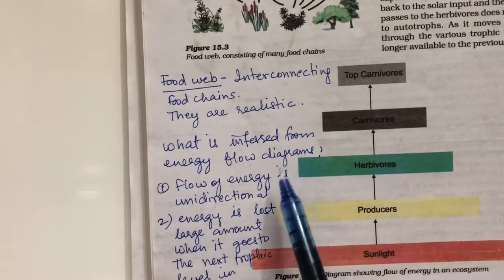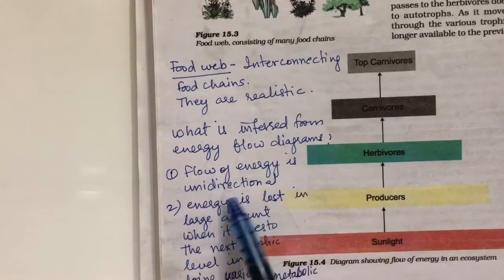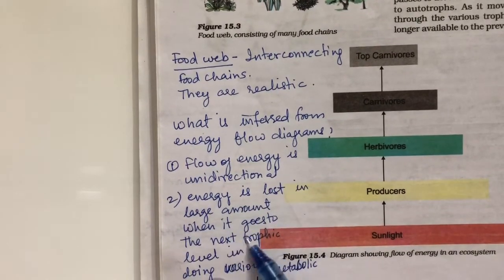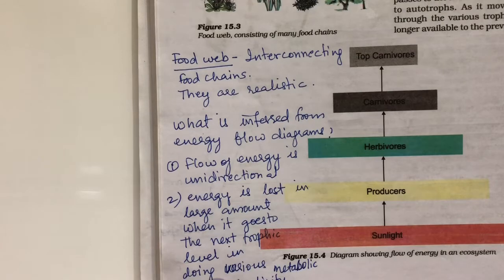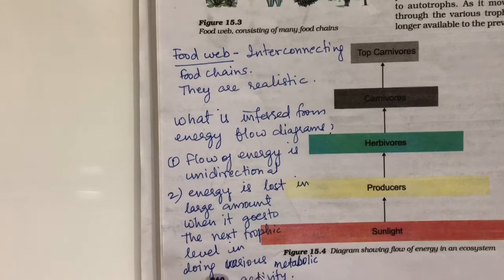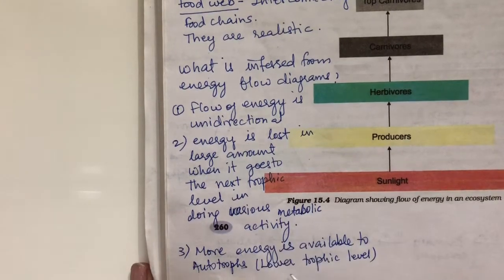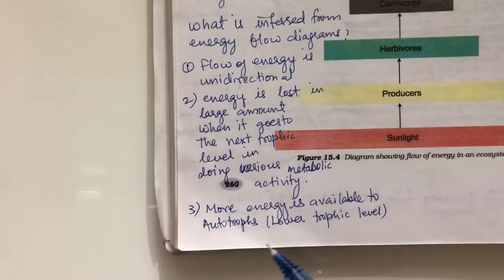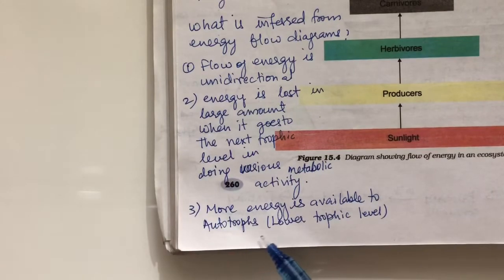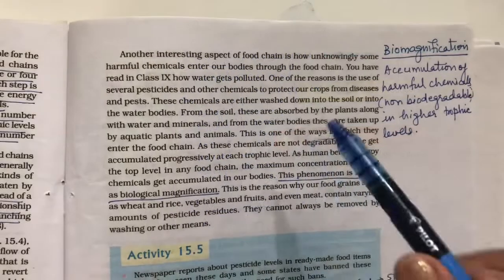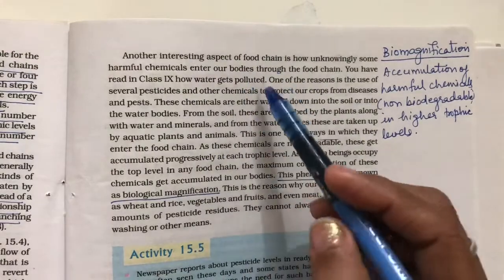From energy flow diagrams, we infer that energy flow is unidirectional and is lost in large amounts at each trophic level through metabolic activities. More energy is available at the autotroph level, which is the lowest trophic level.